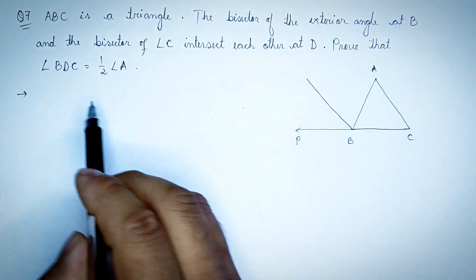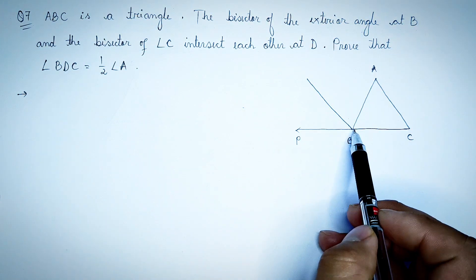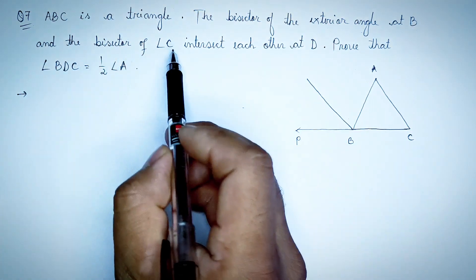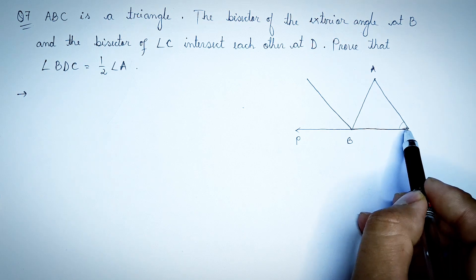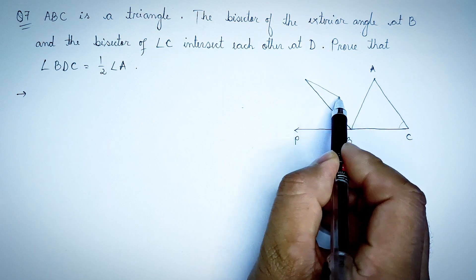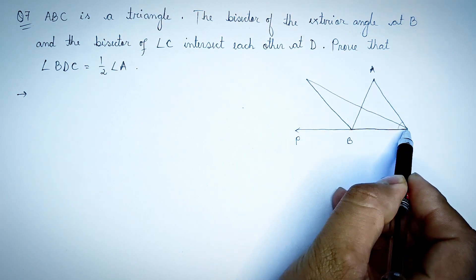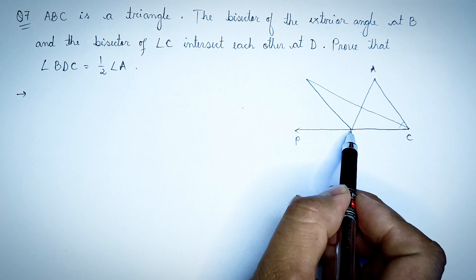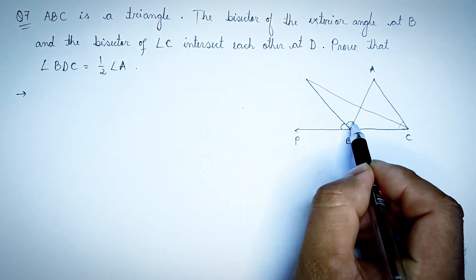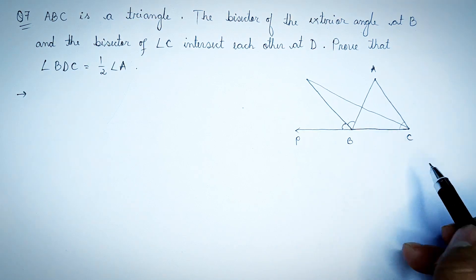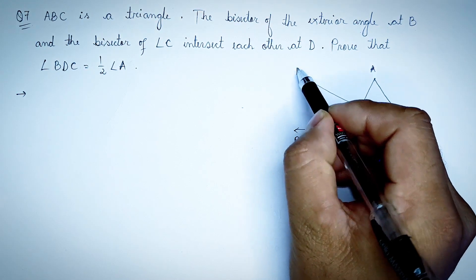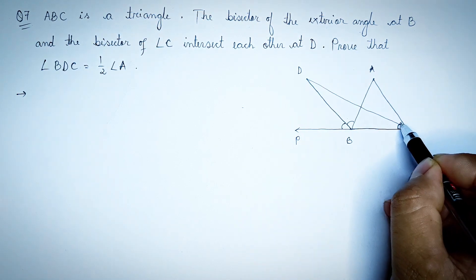The exterior angle of A and B — if the angle B is an exterior angle, we can see this angle is divided into two equal parts. If the angle C is an exterior angle, we can see that D gives us angle C divided into two equal parts.